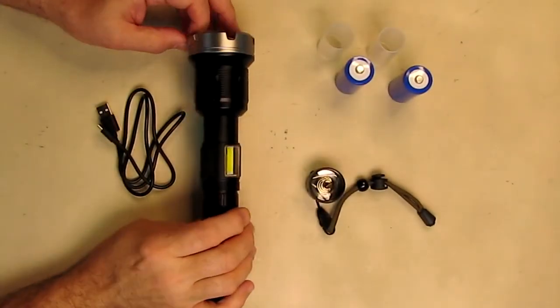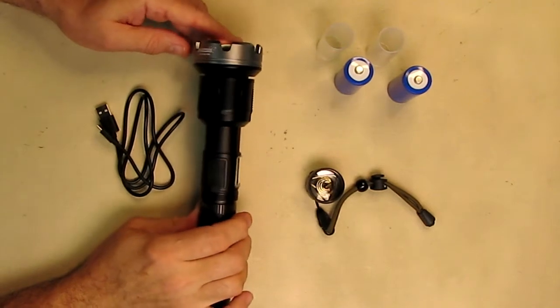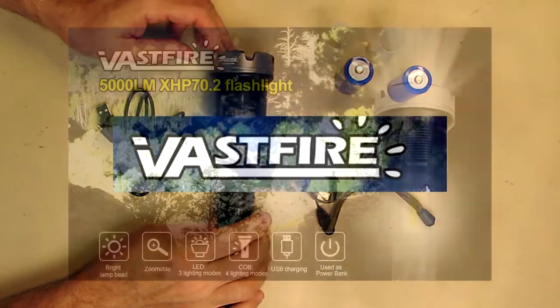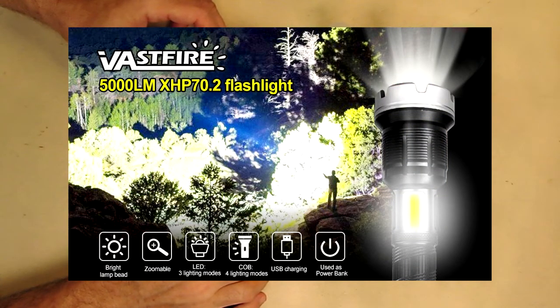Hello again, this is Robert Veach here. This is my video review of the Vastfire brand rechargeable flashlight. It's got a very bright 5000 lumen and is totally zoomable.